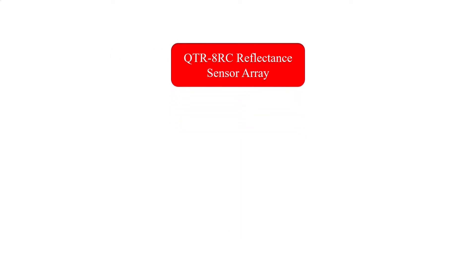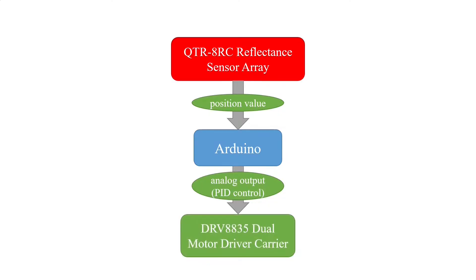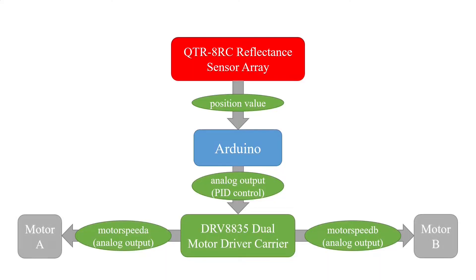After the sensor array outputs the value of the position of the line, the Arduino will compare it with an exact value of 3500, which indicates the value when the line is on the center of the sensor array. The error will then be used as a correction to the speed of the motors.